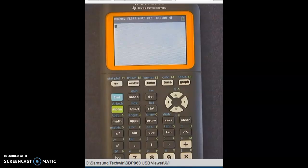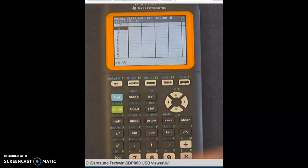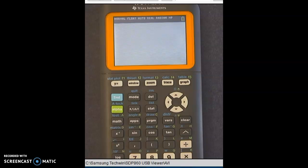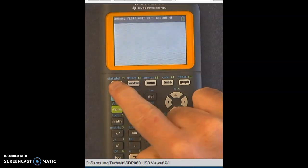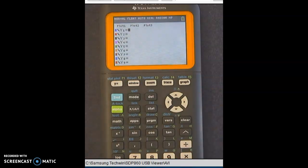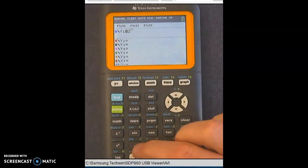you can always hit second and then mode, which gives us to our quit button, and that will always get us back here. But to use our table today, we're going to hit the Y equals button. This is the same button we hit to get into graphs. And so if I wanted to look at a table for, let's say we're doing an exponential like we were doing, so 2 raised to the X,